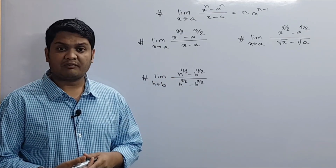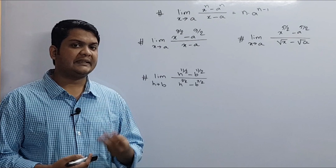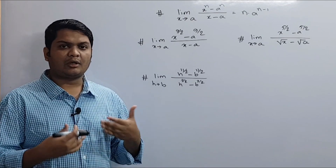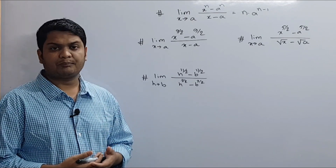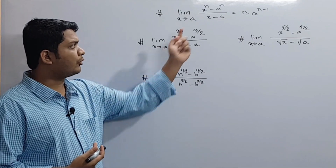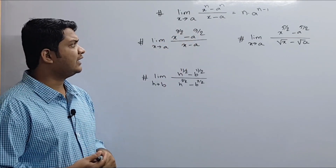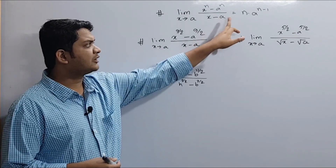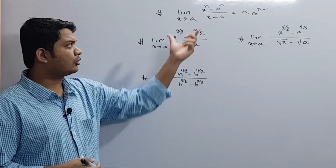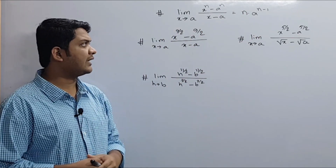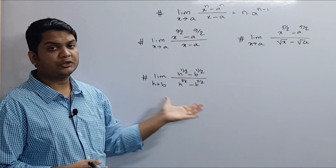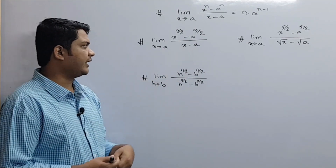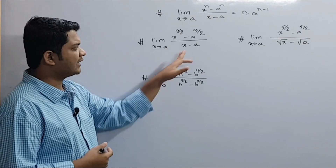We have this problem with rational functions. This is the case of a rational function, specifically x to the power n divided by x minus a.